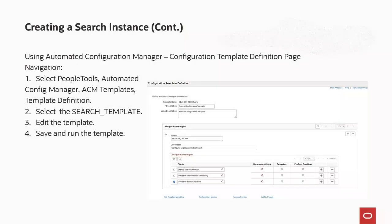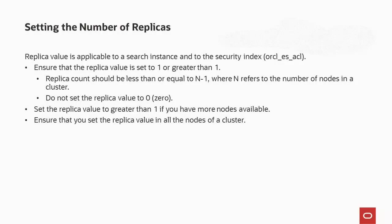To use Automated Configuration Manager to create an OpenSearch instance, you use a delivered template — the search template — that automates the configuration process. On the search options page, when you specify a replica value in PeopleTools 8.61, the replica value is applicable to a search instance and to the security index orcl-es-acl. Ensure that the replica value is set to 1 or greater than 1 so that in the event of a node failure, data loss does not happen. The maximum number of nodes that can be down without loss of data will be equal to the number of replicas.